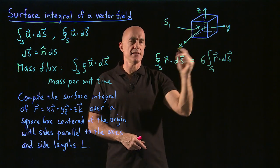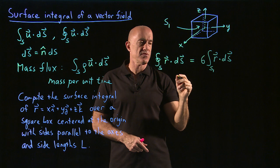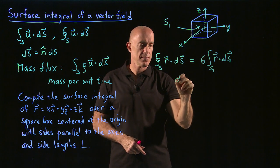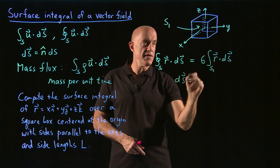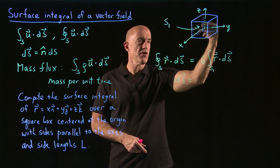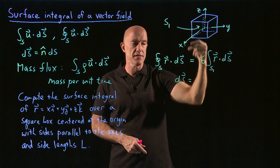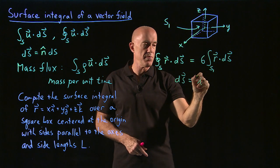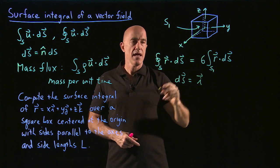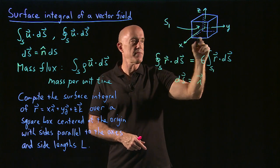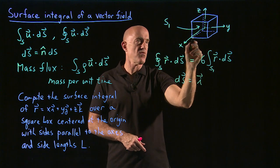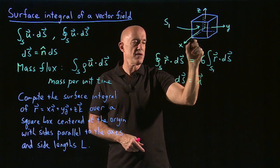So what is ds for S1? The normal vector for this front face is going to be pointing in the positive x direction. So the unit vector will be i. And then the surface element of this front face, it has a little bit of y and a little bit of z.